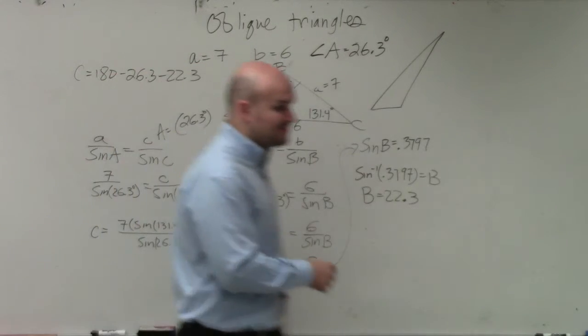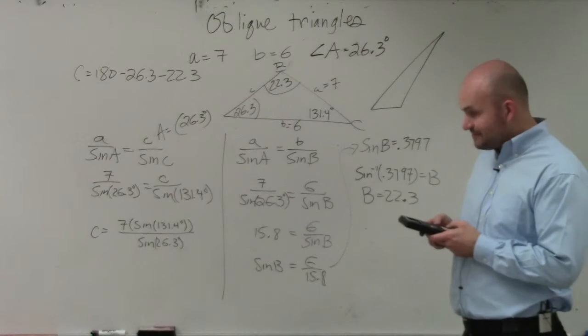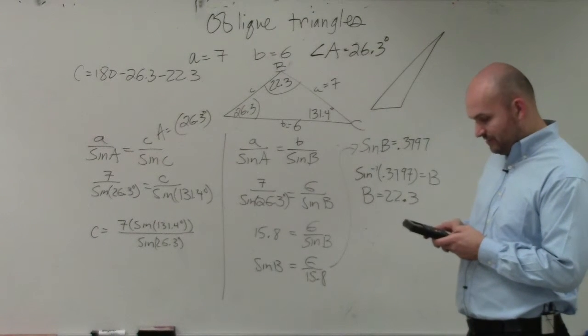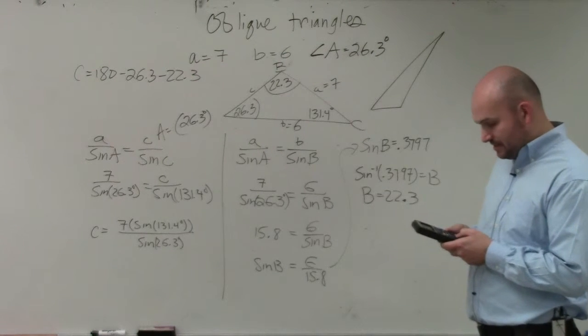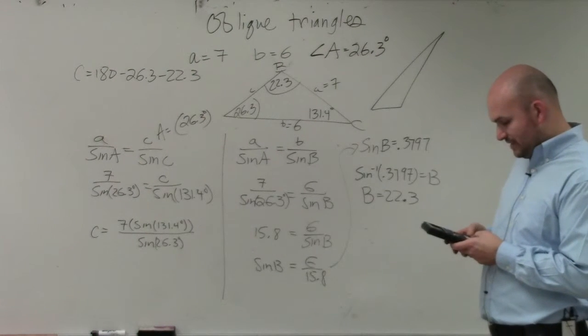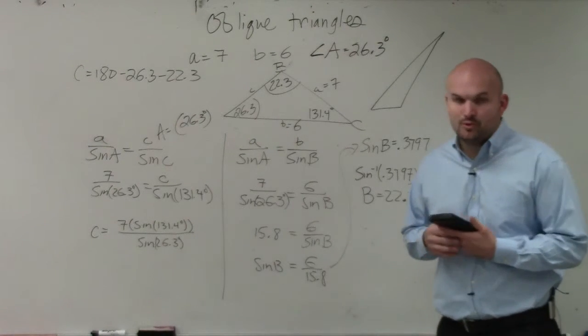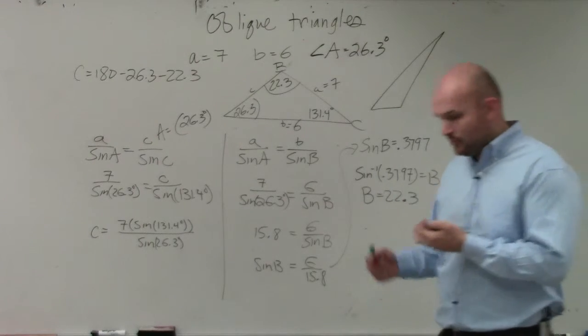So now, all I'm simply going to do is just go in my calculator. I'm going to do 7 times the sine of 131.4, and then I'm going to divide that by the sine of 26.3. And when doing that, I get 11.85. I'm going to round that to the tenth decimal place. It would be 11.9.